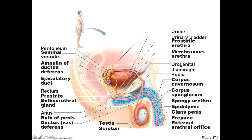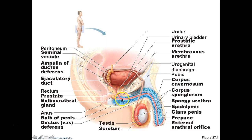The seminal vesicle duct and the ductus deferens come together to form the ejaculatory duct, which moves through the prostate gland. This becomes the prostatic urethra. After exiting the prostate, there is a short middle portion called the membranous urethra. This joins the duct of the bulbourethral gland, at which point the urethra is now called the penile urethra, or spongy urethra — and it moves out through the external urethral orifice.